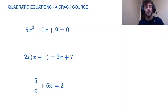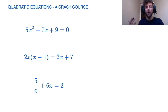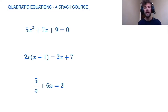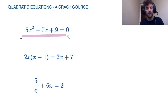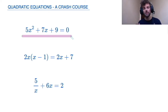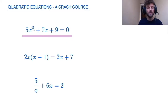First and foremost, we need to ask ourselves what a quadratic equation is. A quadratic equation is simply a polynomial of order two. A polynomial is an equation with an unknown raised to different powers. For example, here I have a polynomial. There's x, my unknown, and it's raised to different powers. Order two means that the highest power to which it is raised is two.